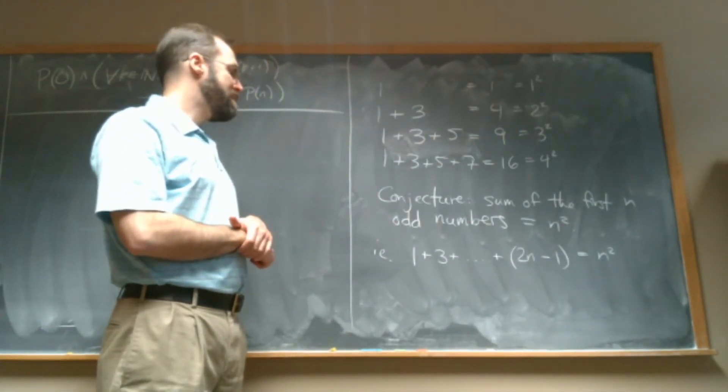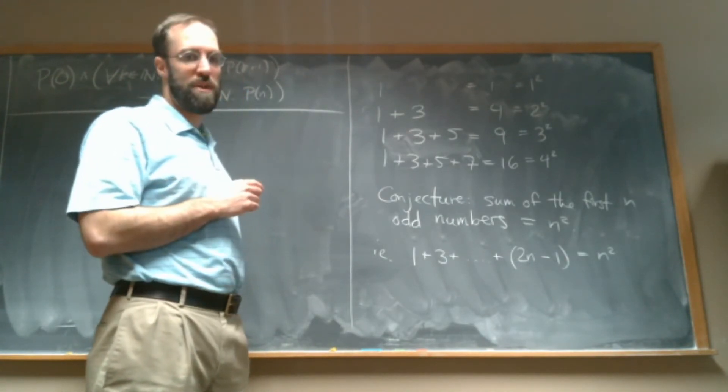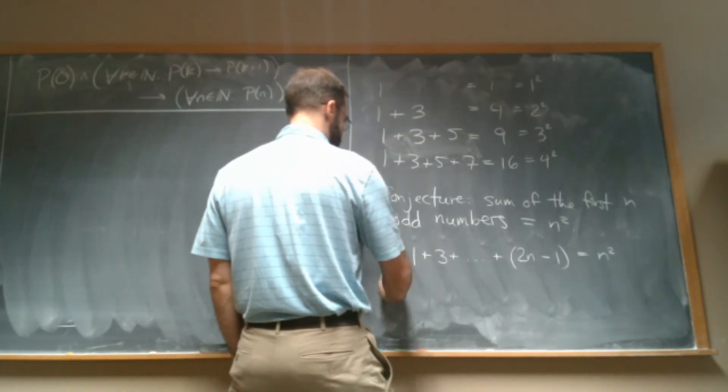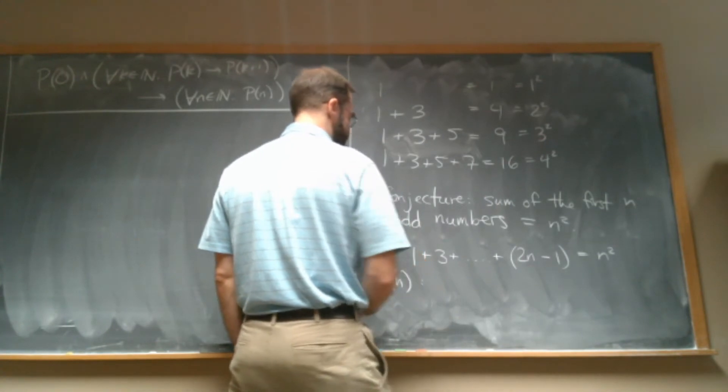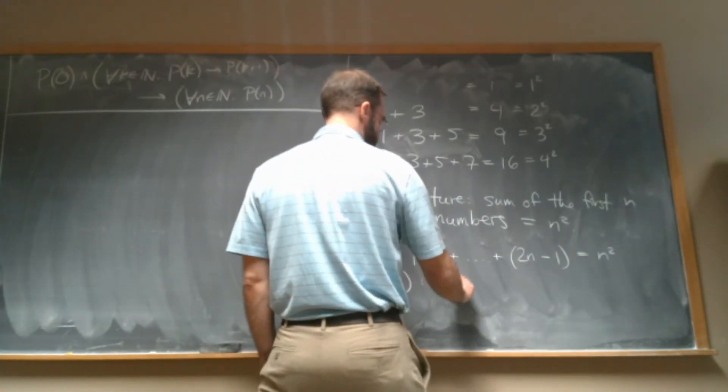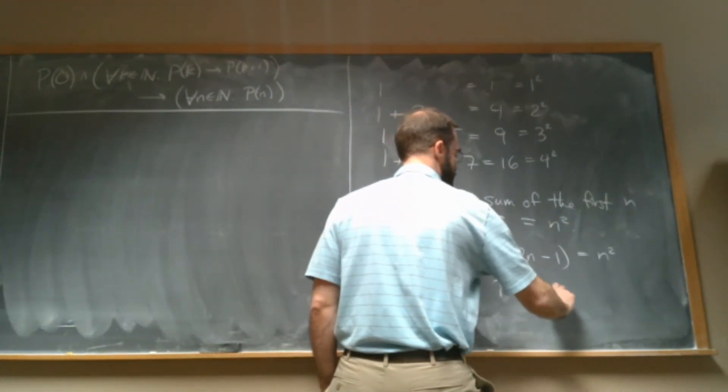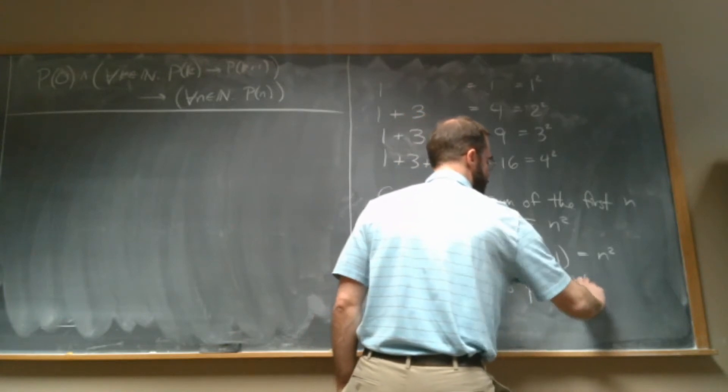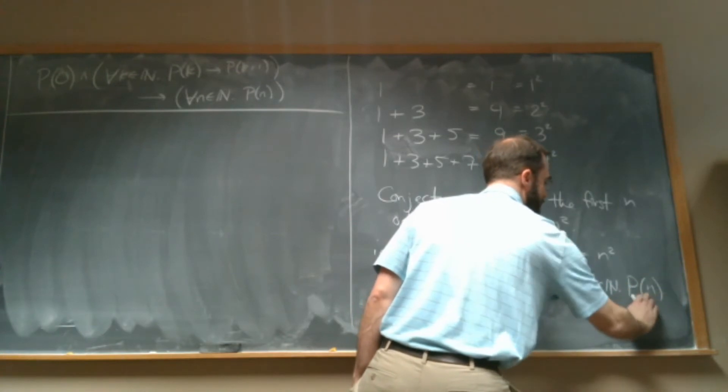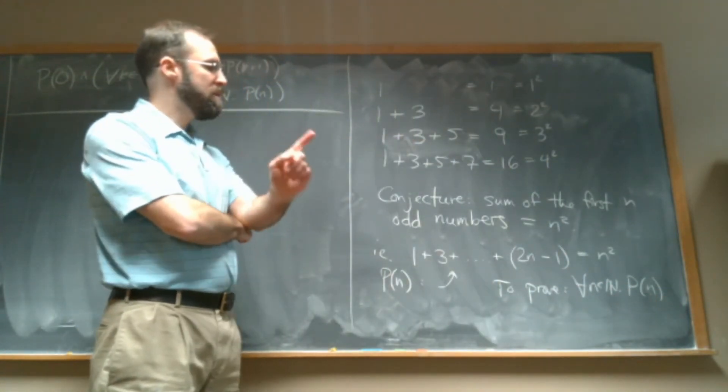And so our conjecture is that this is equal to n squared. And so this is the proposition we're trying to prove. So we're going to say P(n) is our proposition that says this, right? And we want to prove, for all natural numbers, P(n) holds.